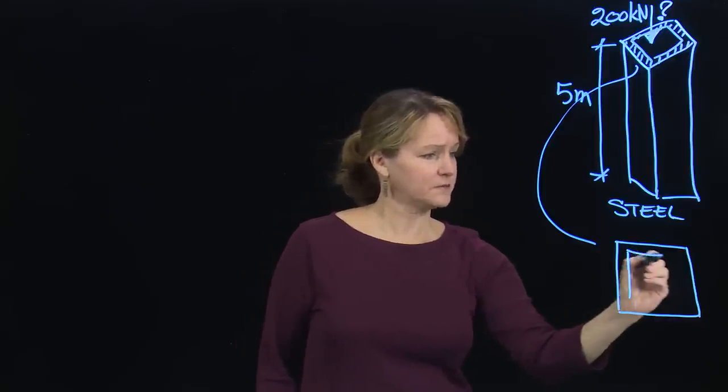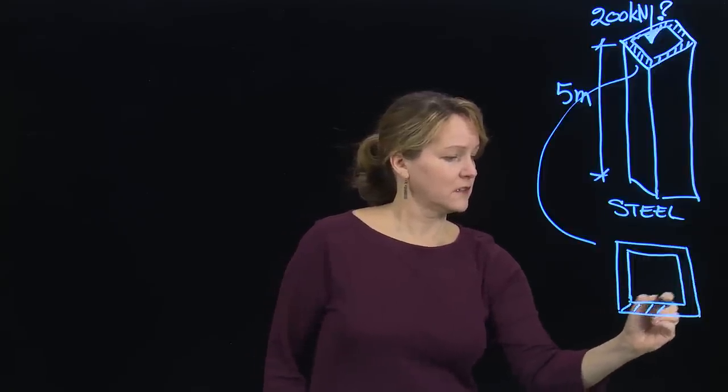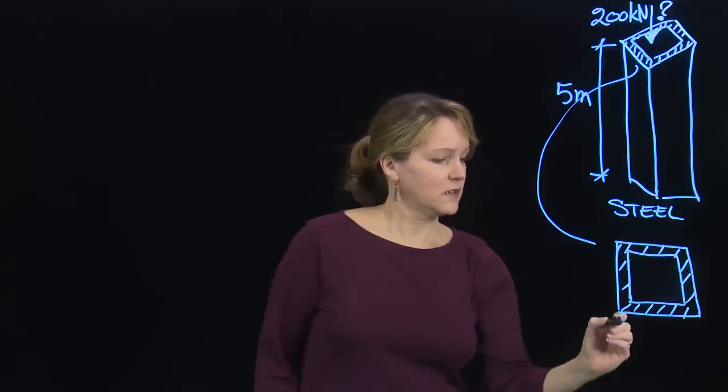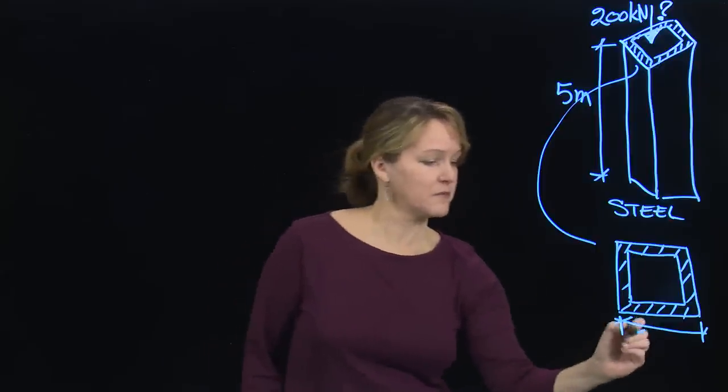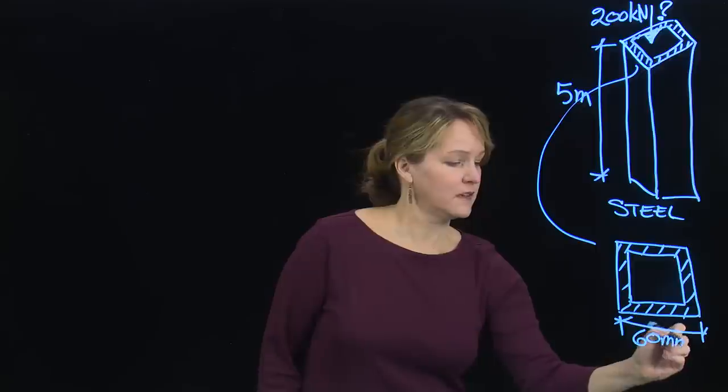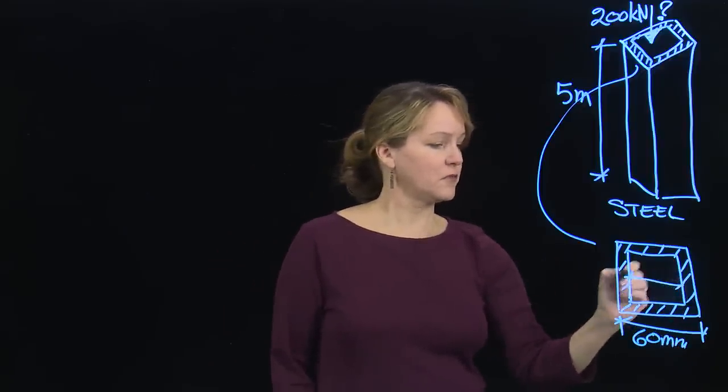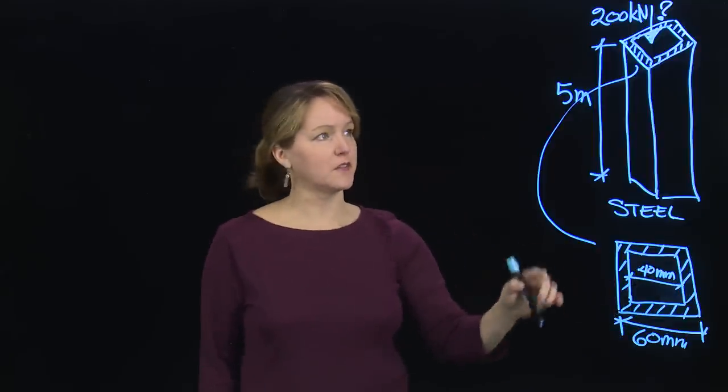So it's a square cross-section, again made out of steel, just to make sure we know that it's hollow. I'm going to try some certain dimensions to start with. So I'll start with 60 millimeters for the outer dimension, and I'm going to start with 40 millimeters for the inner dimension. That'll help me calculate the properties for this column.